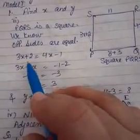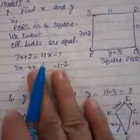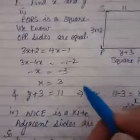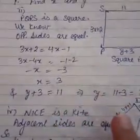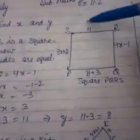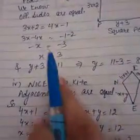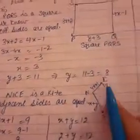We need to bring x values to one side and constant terms to one side. When you change sides, the sign also changes. From there we get the value of x as 3. Second, y plus 3 is equal to 11, so this 3 will go to the other side and become minus, and we find the value of y as 8.